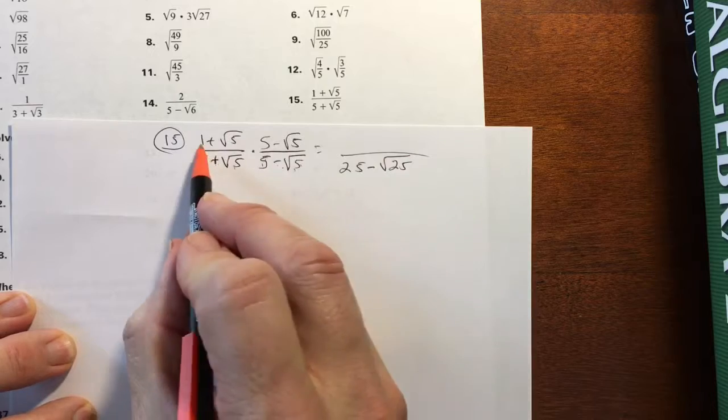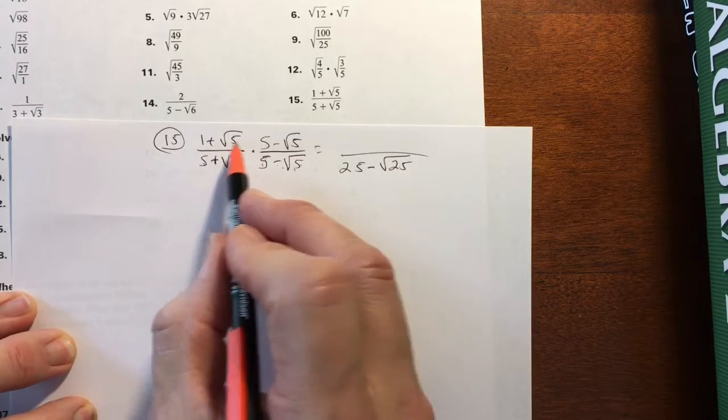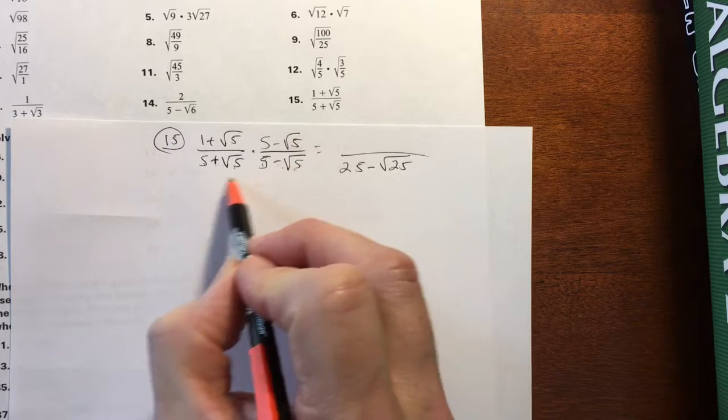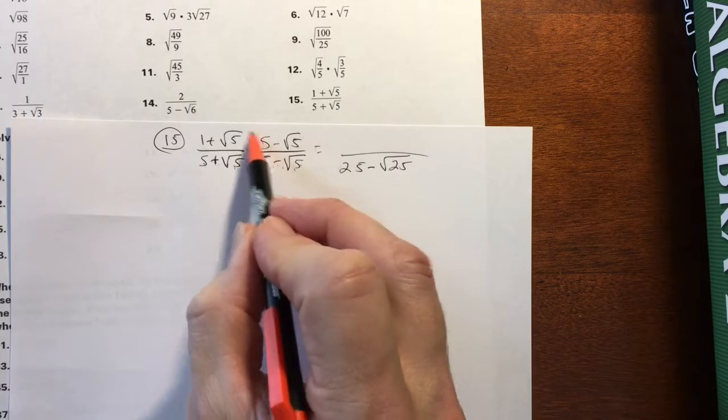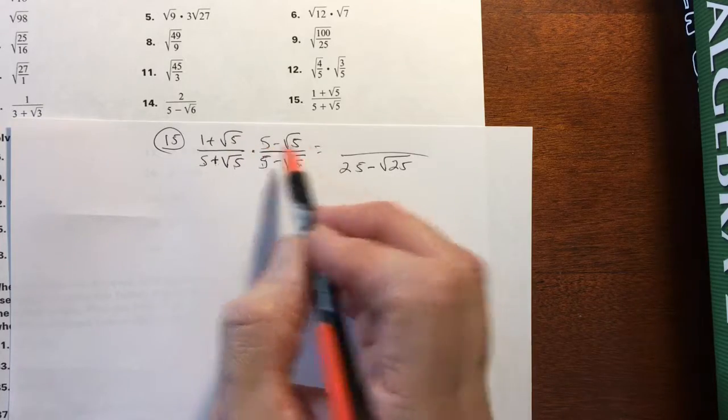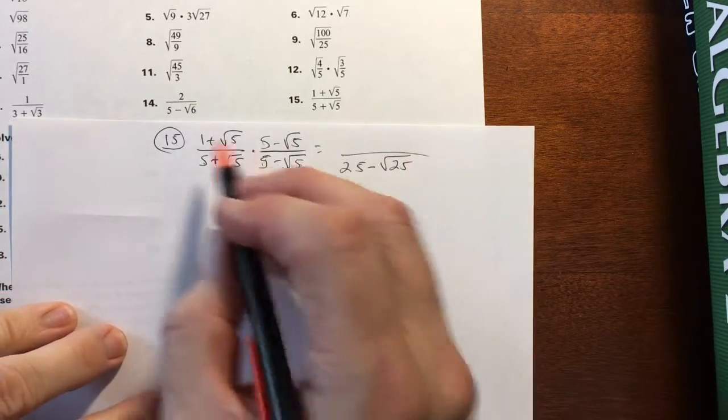And you created the perfect square here. So this will clean up on the denominator. And upstairs, you've got to multiply. Now you're going to be doing FOIL here. Now look, this does not, you have a negative square root of 5 with the outsides. The insides gives you a 5 square root of 5. So you're not going to get rid of the radical.